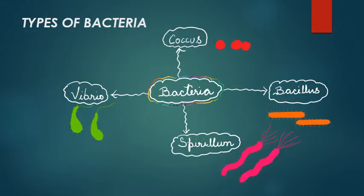Bacteria may have different shapes, and according to their shapes they have been given different names. We will study four major shapes. Bacteria with a round shaped body are called coccus (singular) or cocci (plural).